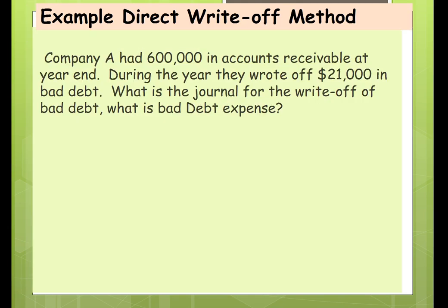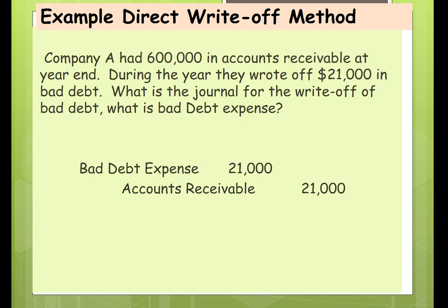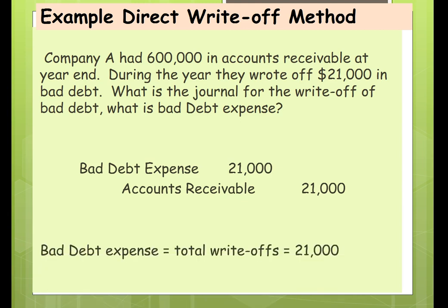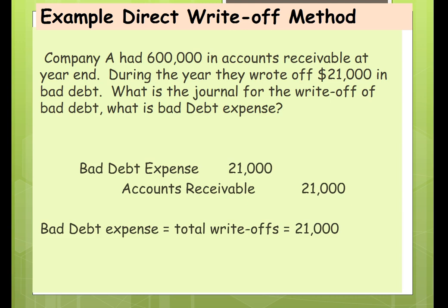Now let's go through an example of the direct write-off method. Company A has $600,000 in accounts receivable at year end and wrote off $21,000 in bad debt during the year. We debit bad debt expense and credit accounts receivable to remove it from the books. Under the direct write-off method, bad debt expense equals total write-offs for the year — in this example, $21,000.